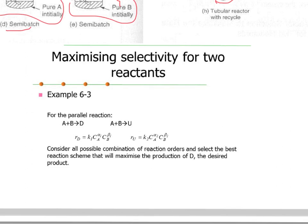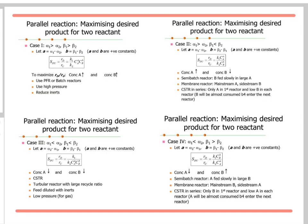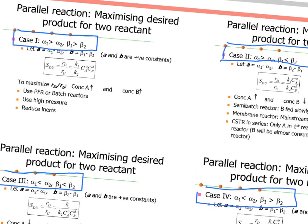Now we look into maximizing selectivity for two reactants in parallel reactions: A + B → D (desired) and A + B → U (undesired). We consider all possible combinations of reaction orders and select the best reaction scheme to maximize production of D. There are four cases: Case 1: alpha1 > alpha2 and beta1 > beta2; Case 2: alpha1 > alpha2 but beta1 < beta2; Case 3: alpha1 < alpha2 and beta1 < beta2; Case 4: alpha1 < alpha2 and beta1 > beta2.